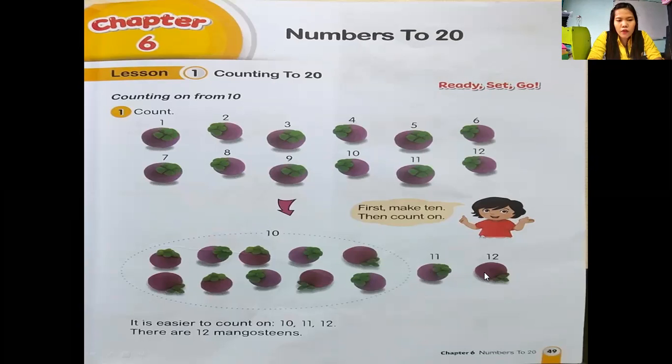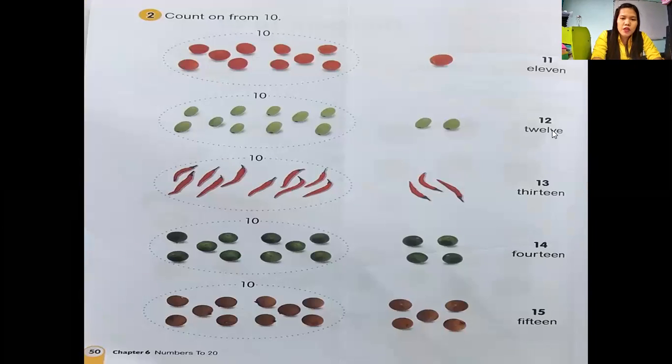Example: 10, 12, 13, 14, 15, 16, 17, 18, 19, 20. You can see this picture. Anak-anak bisa lihat contoh dari gambar ini. Look at the first, the fruit, the red fruit.